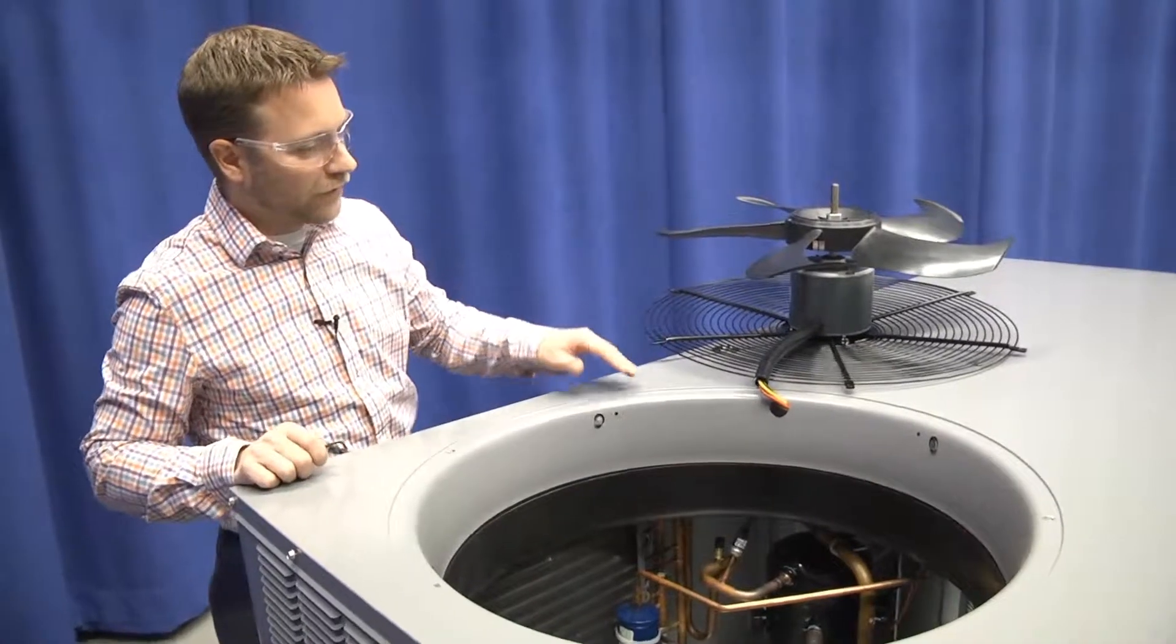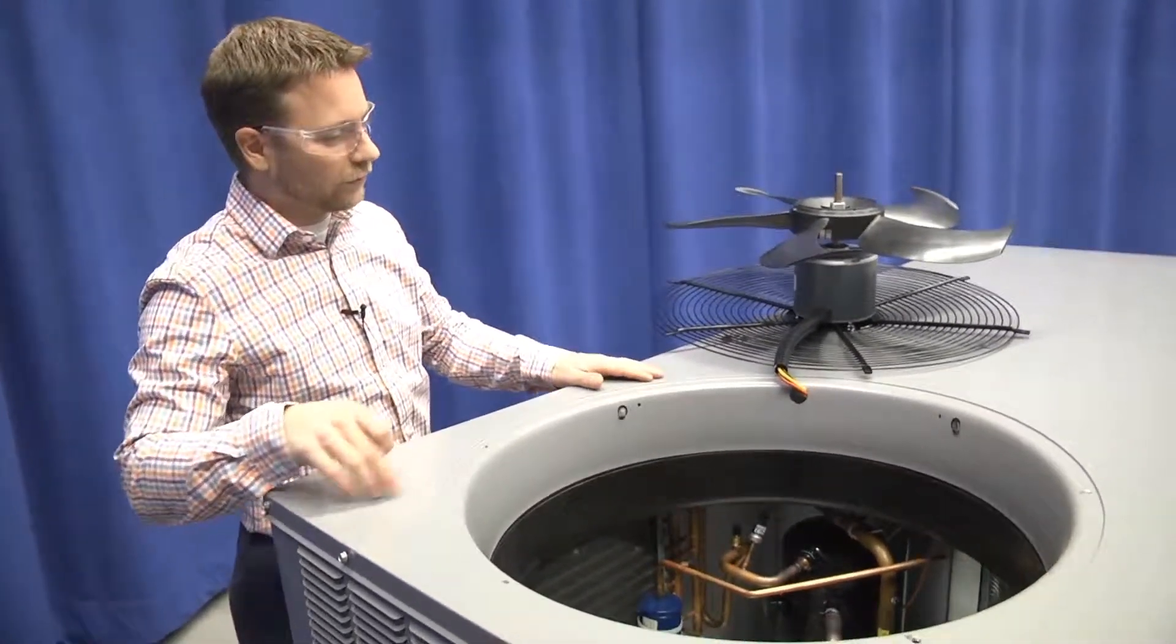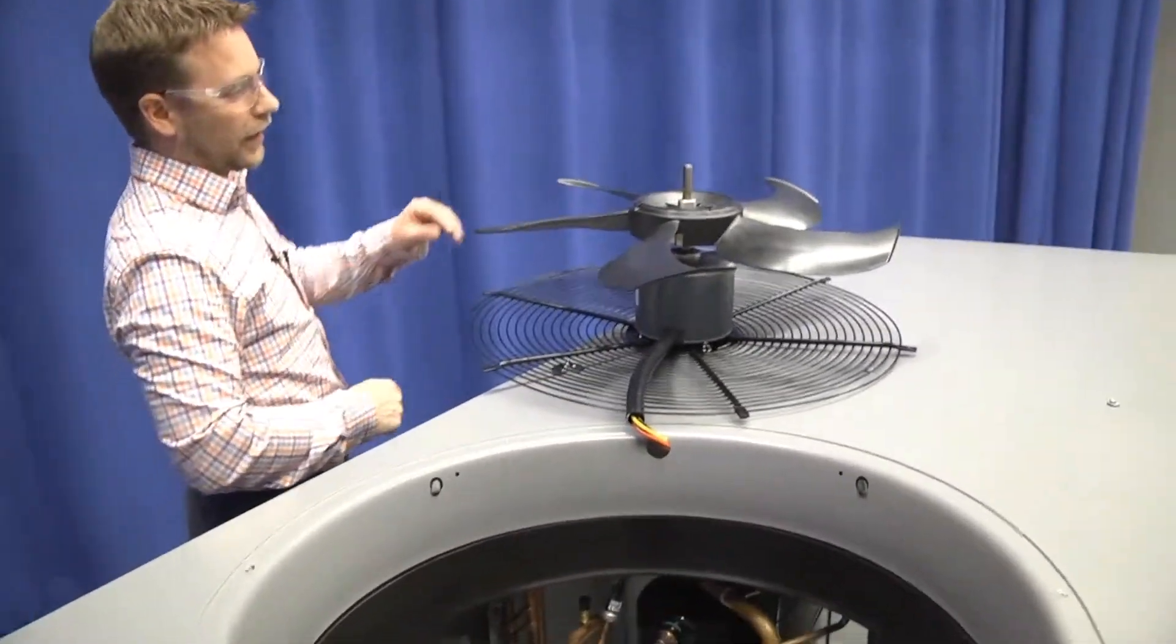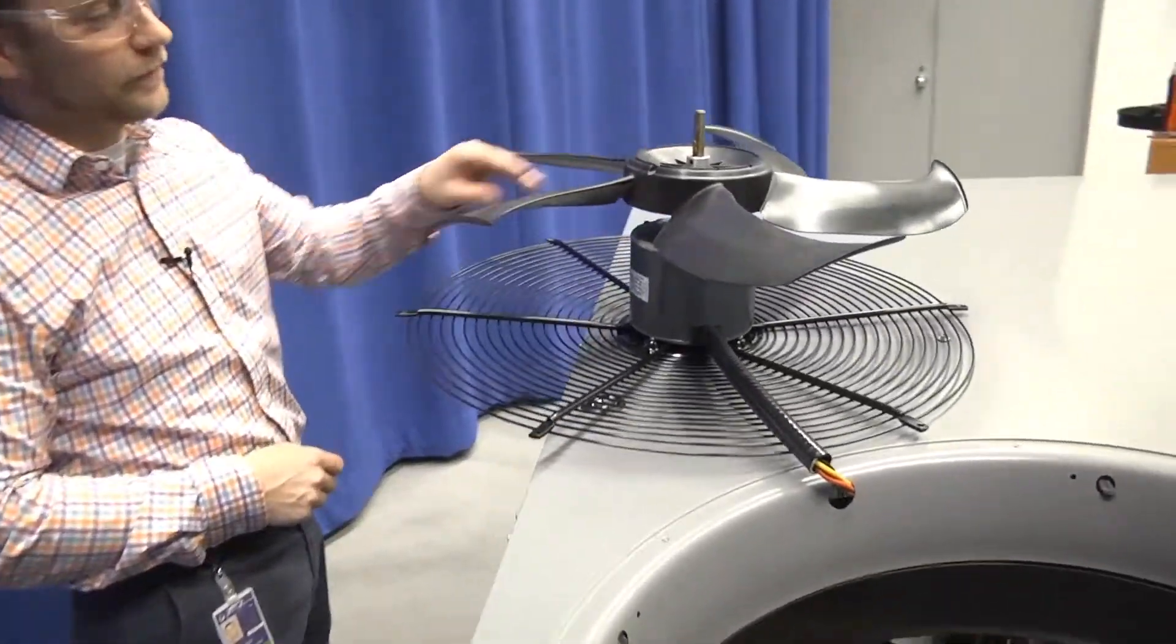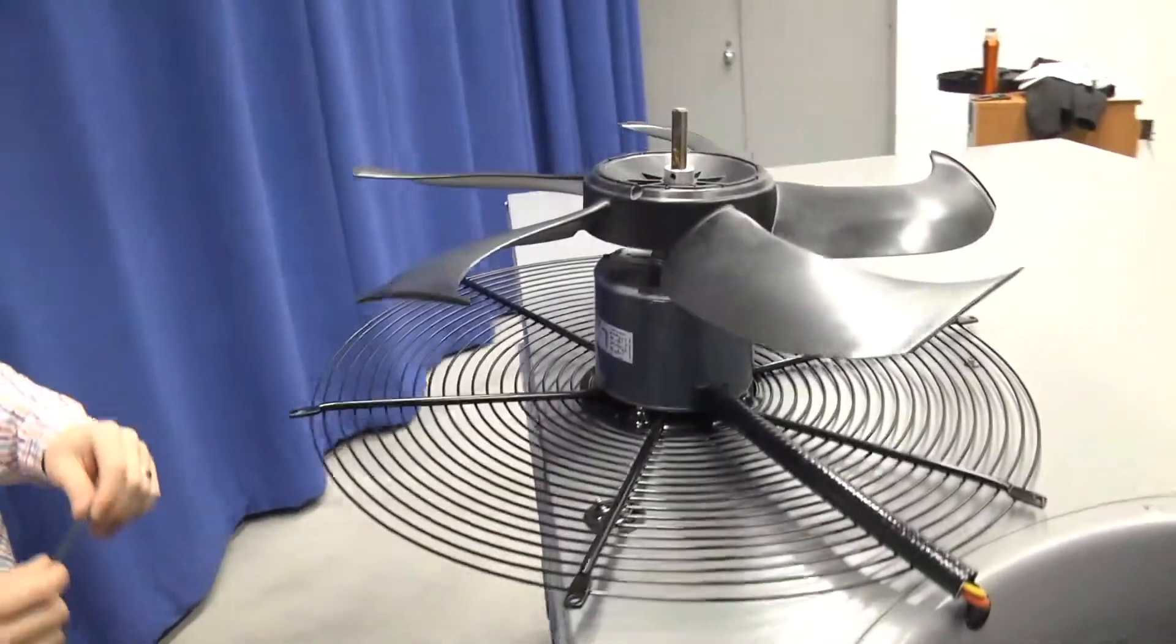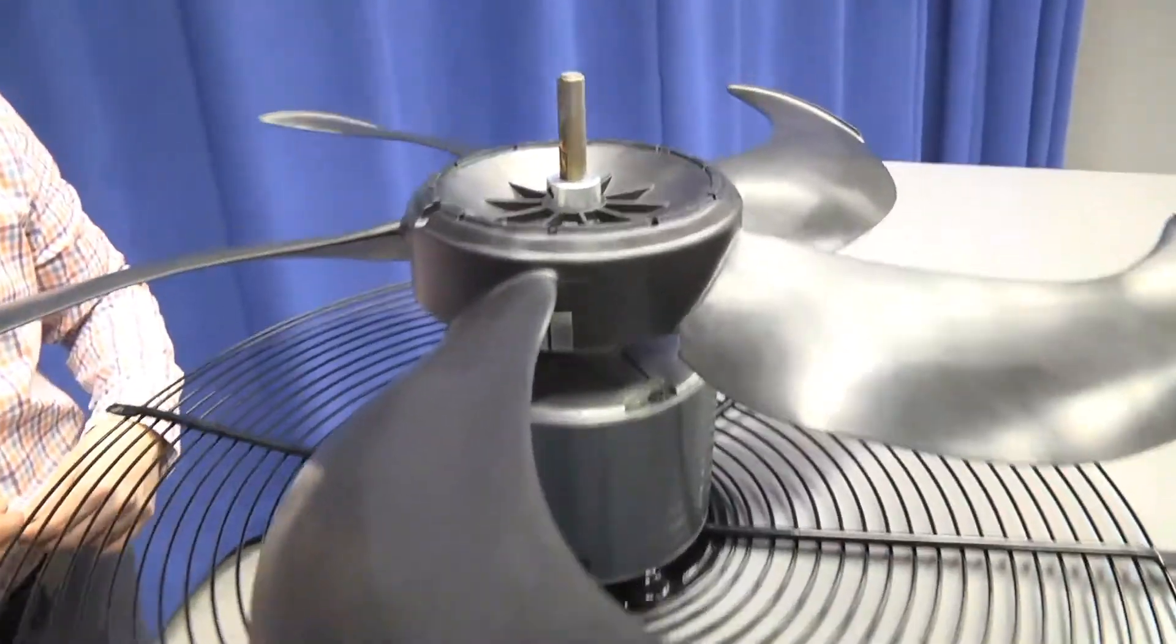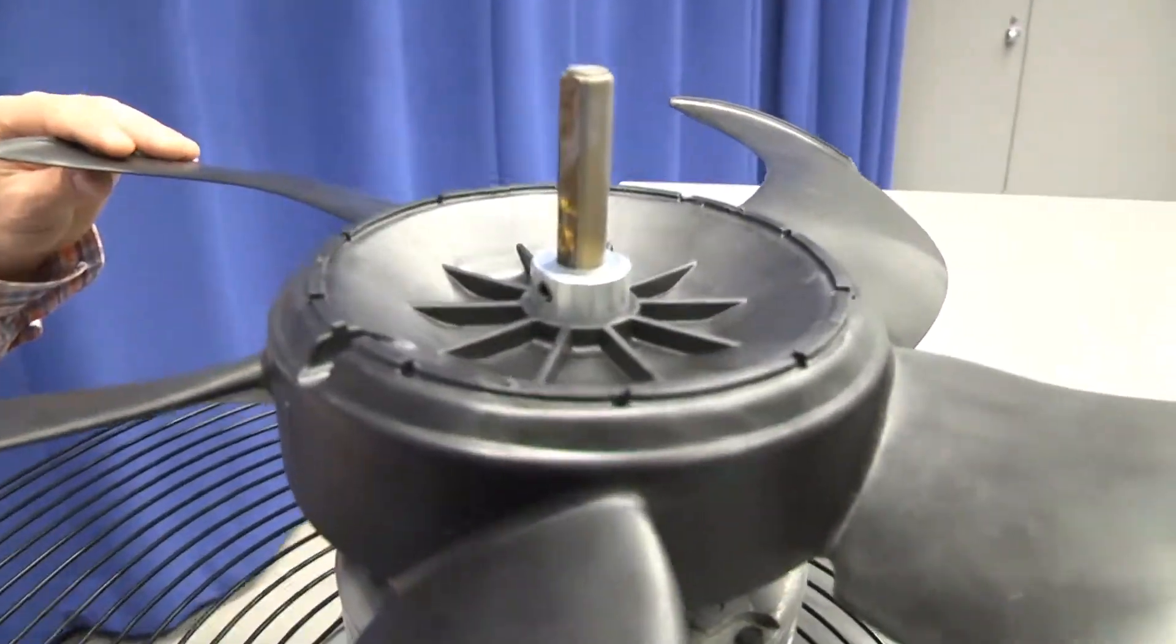Here we've dismounted the outdoor fan assembly by taking the screws out of the grill and just flipped it upside down on the top cover so we can access the fan. You can see the fan is held in place with one set screw, it's an eighth inch hex set screw.